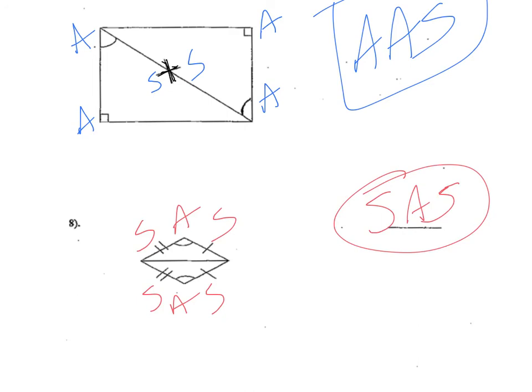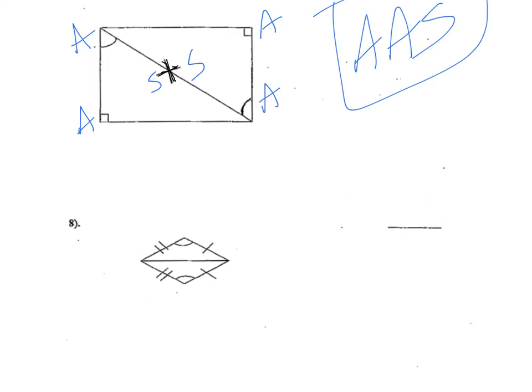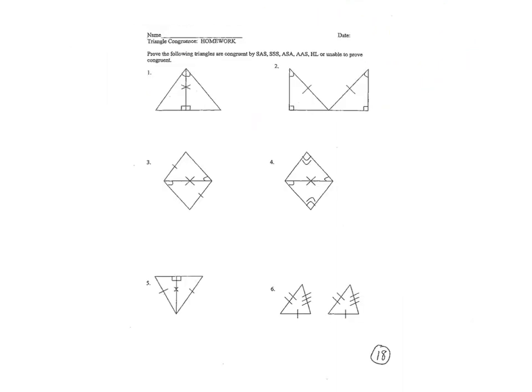Try to remember that you have five choices and you have to choose one of those five. Now I'd like you to turn to the next page and try these six questions on your own — determine if there's enough information to prove that the triangles are congruent using one of the five methods. Some of them may not have enough information. Thanks, and I'll see you tomorrow.